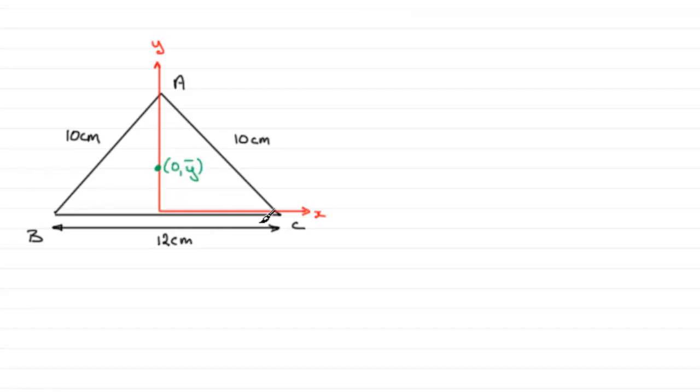Now we need to work out the mass of each rod and place that mass wherever it happens to be on the rods. Well, we know that the rods are uniform so that mass will be at the center of each rod.